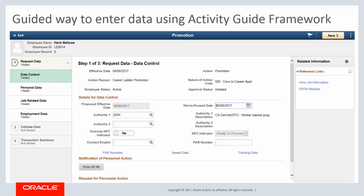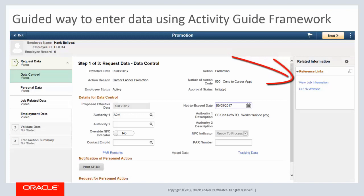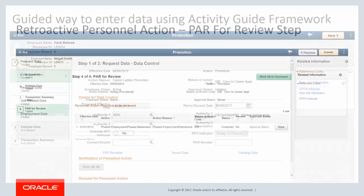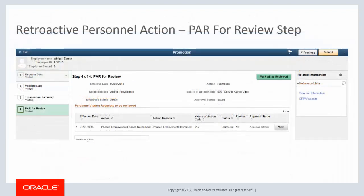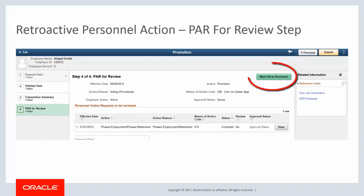The guided process enables you to view important links for reference while entering PAR details. The GPPA website link also appears by default for reference. The enhanced process also simplifies how retroactive personnel actions are entered in the system. You can mark all higher-dated rows as reviewed with a click of a button.